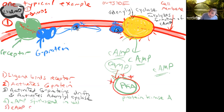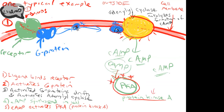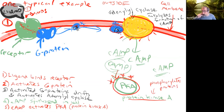Step five: cyclic AMP activates protein kinase A. What does a kinase do? Phosphorylate a protein — exactly. Protein kinase A phosphorylates proteins. Some of the proteins it might phosphorylate are transport proteins in the membrane like a channel, so by phosphorylating a protein it can open or close a channel.